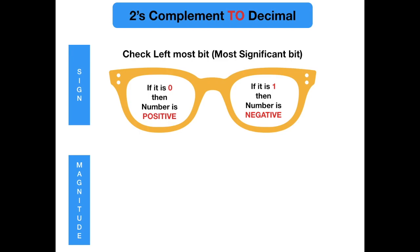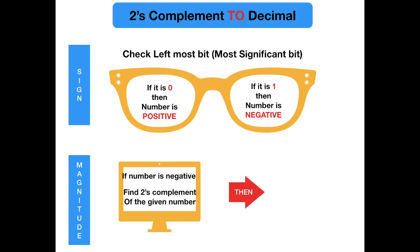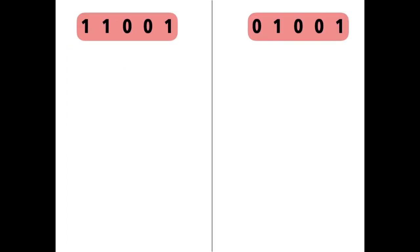To find the magnitude, if the number is negative, we find the 2's complement of the number. If it is positive, we leave it as it is and then convert the binary number to decimal to get the magnitude. It will be more clear with these examples. So, first step is to decide the sign. The leftmost bit: if it is 1, it's negative; 0 means positive.